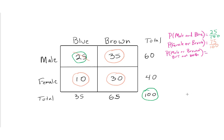What's the probability of male or brown-eyed, but not both? The 25 block is male and blue — meets male. The 10 block is female and blue — meets neither. The 30 block is female and brown — meets brown. The 35 block is brown and male — that's both, so it's excluded. So the answer is 25 plus 30, which is 55 divided by 100.